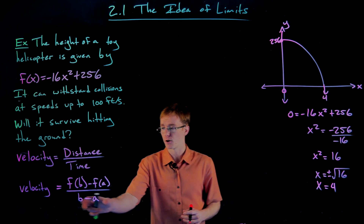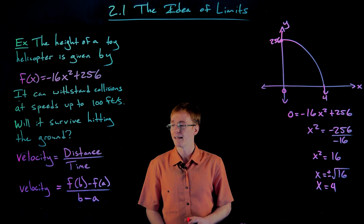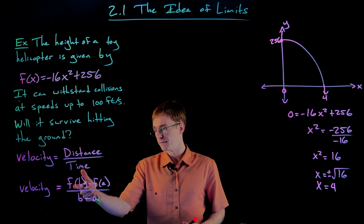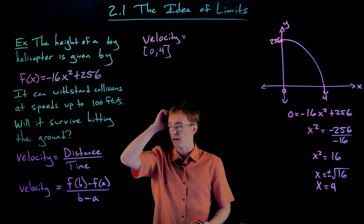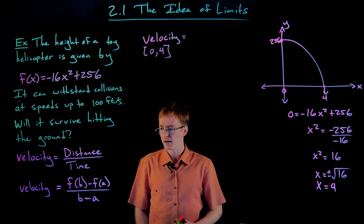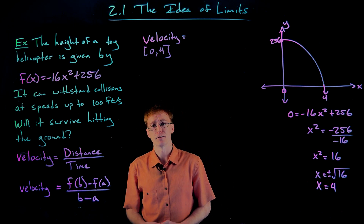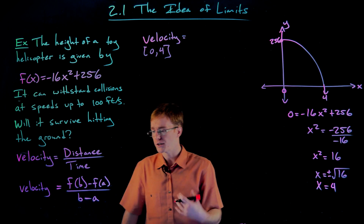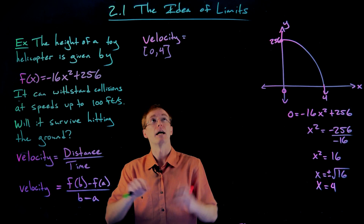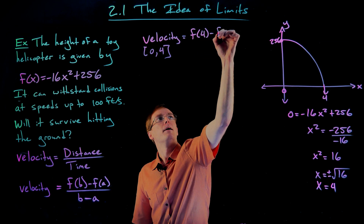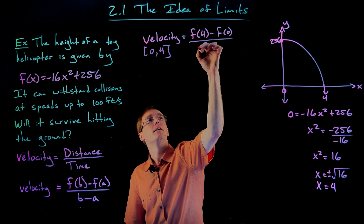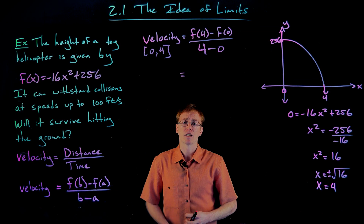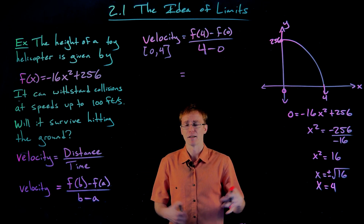Now we have all the information we need for our velocity formula. Velocity is distance over time. We're going to do this calculation several times, so I'm making note of the interval: the entire four-second interval from maximum height to hitting the ground. The velocity over that interval is given by f of b minus f of a over b minus a, which is f of four minus f of zero over four minus zero.